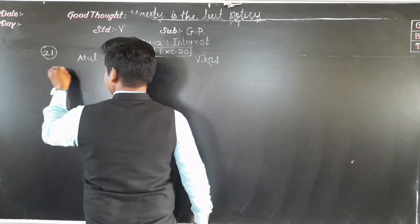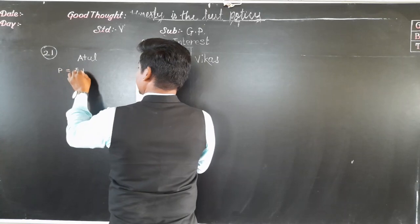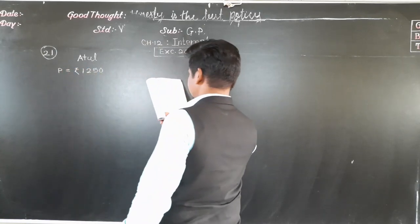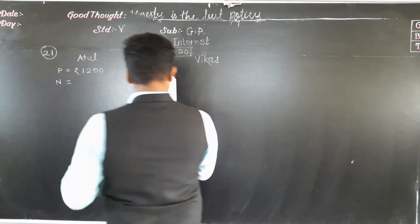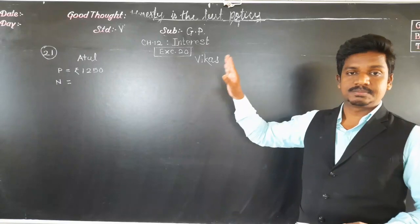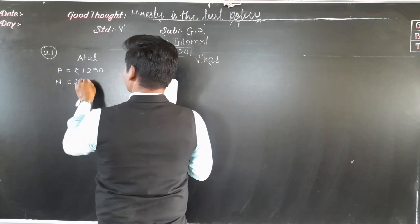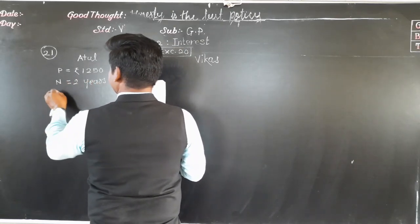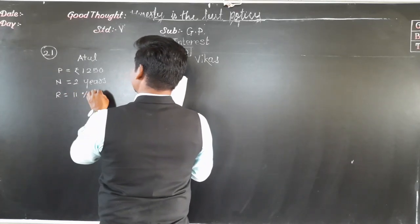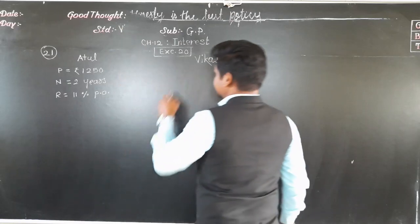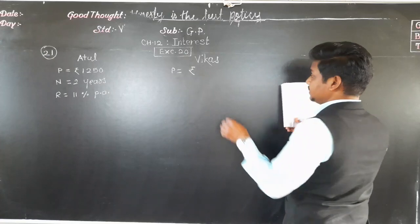In the first case — Atul — the principal is rupees 1250, the period is 2 years, and the rate of interest is 11% per annum. In the second case — Vikas — the principal is rupees 1100, the period is 2 years, and the rate of interest is 12% per annum.